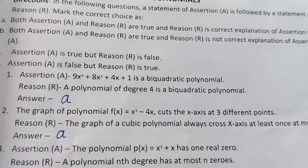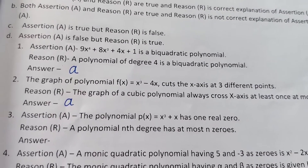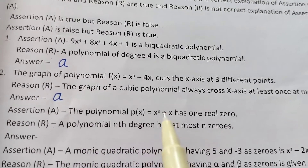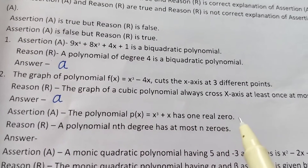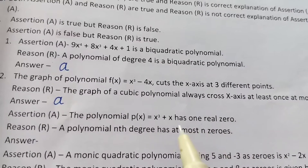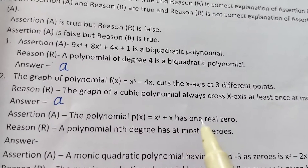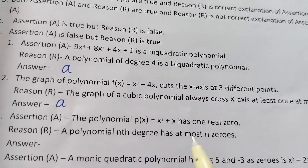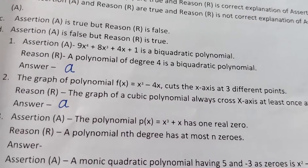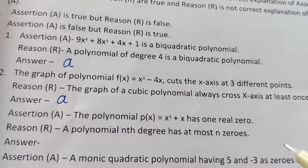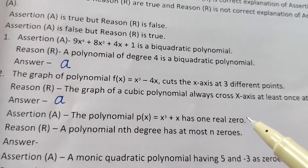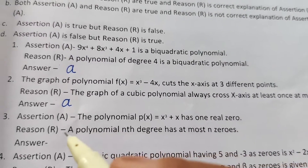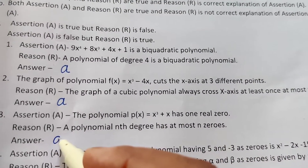Question 3: Polynomial P(x) = x³ + x has one real zero. The reason is that a polynomial of degree n has at most n zeros. Both statements are correct — assertion is right and reason is also valid. So the answer is option A.